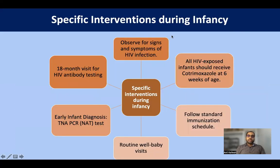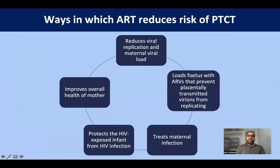During infancy, observe HIV-exposed infants for signs and symptoms of HIV infection. At six weeks, when the baby comes for immunization, start cotrimoxazole prophylaxis and follow the standard immunization schedule. Call them for routine well-baby visits and link them to ICTC for early infant diagnosis per NACO guidelines. At the 18-month visit, perform HIV antibody testing to label the baby as HIV-positive or negative. ART reduces viral replication, loads the fetus to prevent transmitted virions from replicating, and improves the overall health of the mother.